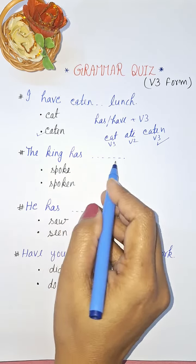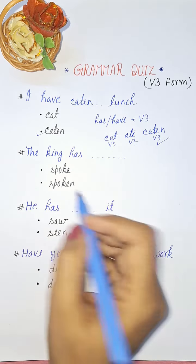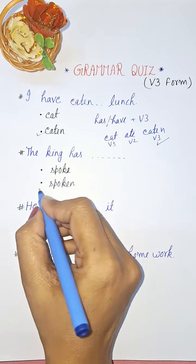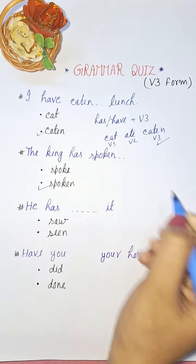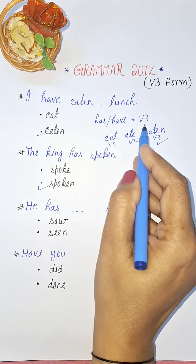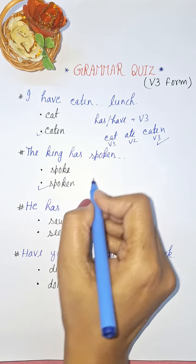Next question: The king has ___. The king has spoken. Speak, spoke, spoken. Same thing - with has and have we always use third form of the verb.